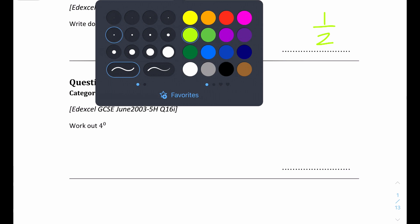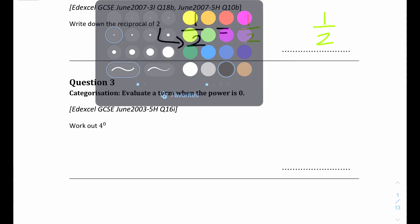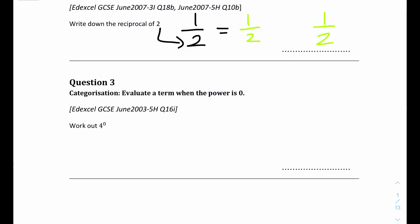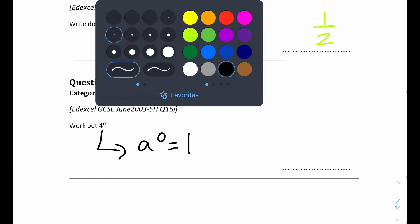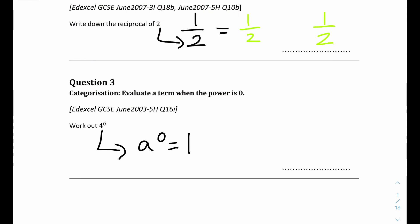Question 3: write down the value of 4 to the power of 0. It's a straightforward question because anything to the power of 0 equals 1 - that is, a to the power of 0 equals 1. So the answer of 4 to the power of 0 is 1.